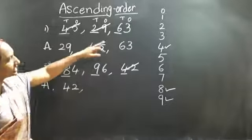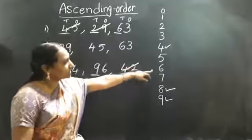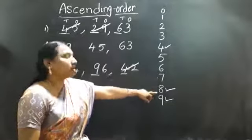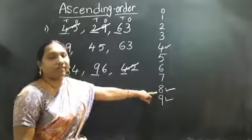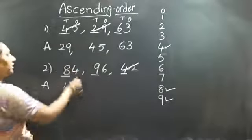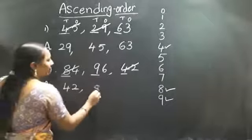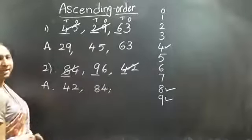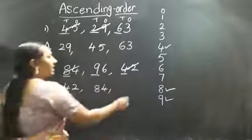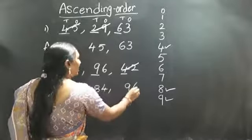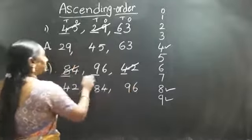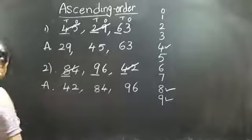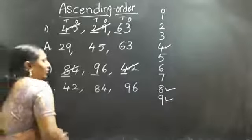Then what number is there? Five — no. Six — no. Seven — no. Eight — yes. Cut the eighty-four. Write this side. Forty-two. Remaining number is ninety-six.